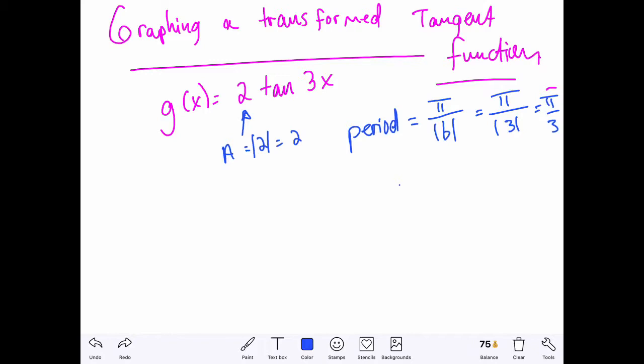And then remember, that's the length of a period, but we have the offset. And so with the offset, we want to multiply it by odd multiples of π over 2b. So π over 2b, π over 2 times 3, which is π sixth.